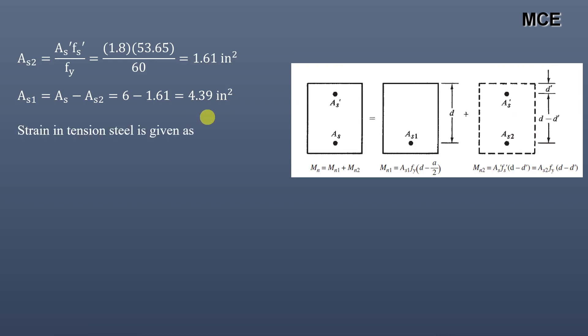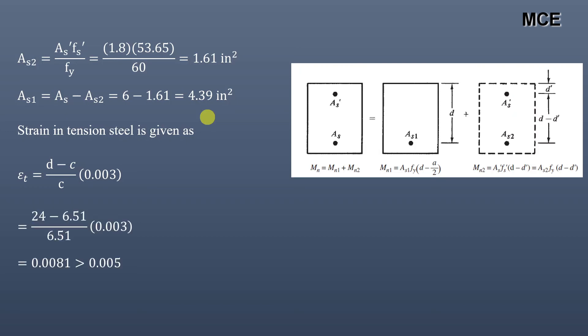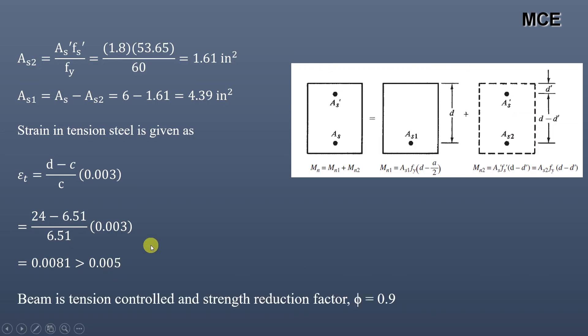Now we will check the strain in the tension steel, given as (D minus C) divided by C times 0.003. Putting values of D and C, we get the strain in the tension steel equal to 0.0081, which is greater than 0.005. This means the beam is tension controlled and the strength reduction factor phi is equal to 0.9.